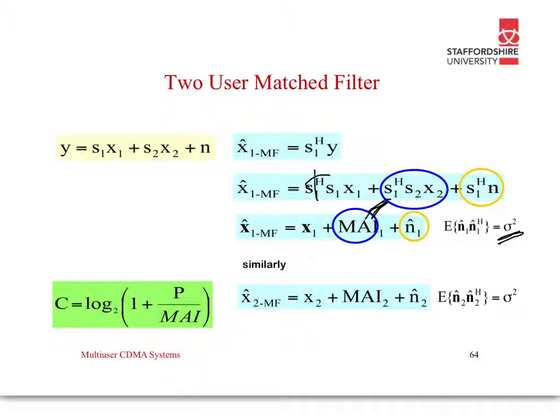We have X1. Now, the output or the match filter response from output X1 hat is X1 plus the multiple access interference from the second user and any subsequent users, so that could be K users, plus the noise. Similarly, at X2 match filter, or the second match filter, we have the output of X2 plus the multiple access interference 2, which is essentially the multiple access interference from user 1, in this case, plus noise 2.